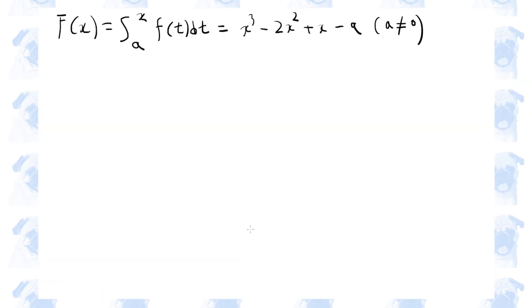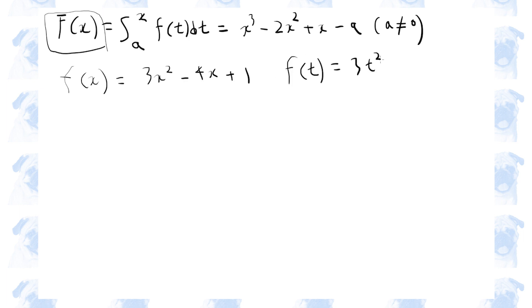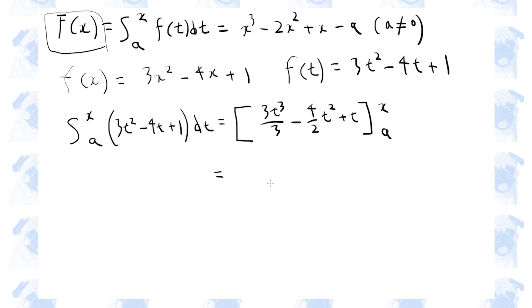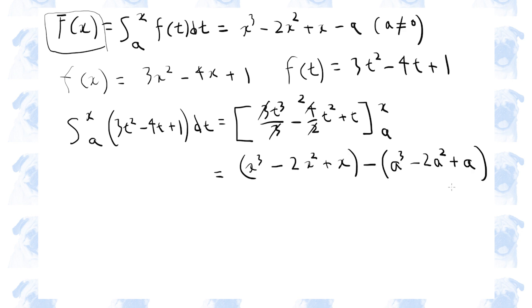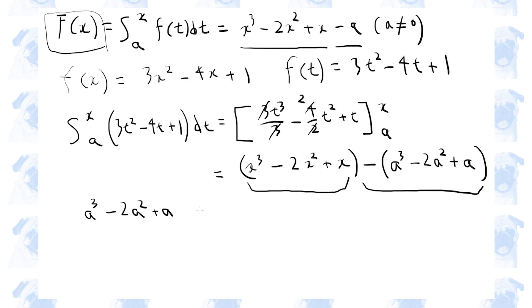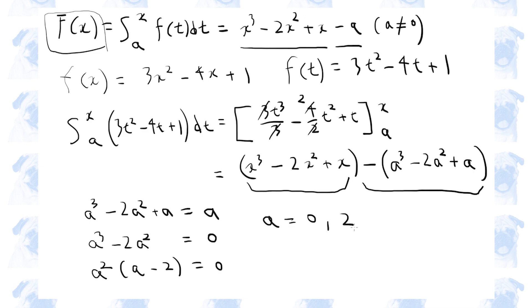We are given the antiderivative of f of x, so let's find the derivative of this function, f of x. Therefore, f of t is 3t squared minus 4t plus 1. Notice that this part corresponds to this one, whereas this part corresponds to the rest minus a. So a cubed minus 2a squared plus a must be equal to a. Therefore a is 0 or 2. But the question says that a is not equal to 0, therefore a must be 2.